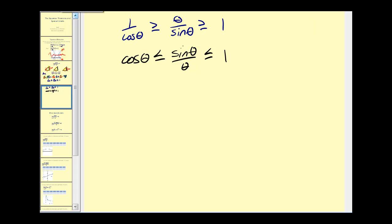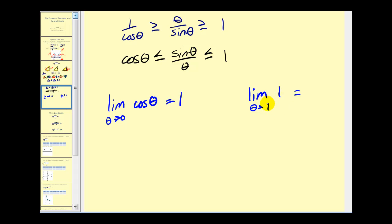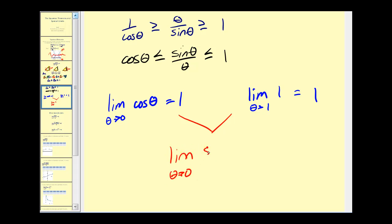Now we're going to take the limit of cosine theta and the limit of one as theta approaches zero. This limit would be equal to one. One isn't even affected by theta, so this is equal to one. Since the limit of cosine theta equals one and the limit of one equals one, we can conclude using the squeeze theorem that the limit as theta approaches zero of sine theta divided by theta must also equal one.